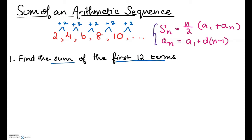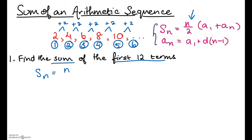A term is the position of a number in a sequence: 2 is the first term, 4 is the second, 6 is the third, and so on. We want to find the sum of the first 12 terms, but we don't know the sixth through twelfth terms. We could add 2 repeatedly, but that's time consuming, so we'll use our formula: S of n equals n over 2 times a of 1 plus a of n. Here, n is 12.